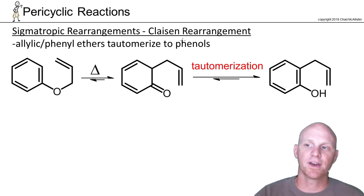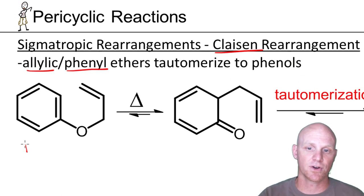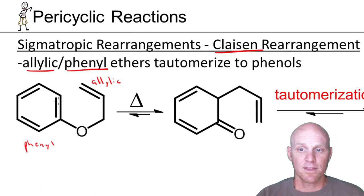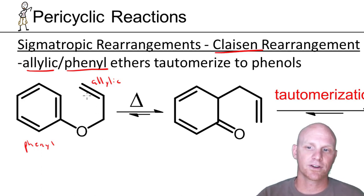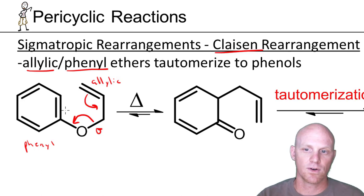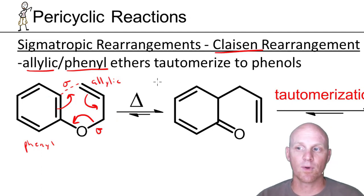There's one special case for the Claisen rearrangement: instead of having an allylic vinyl ether, you have an allylic phenyl ether — a benzene ring. Here's the phenyl part, here's the allylic part. The rearrangement is a little funky, but following the same cyclic movement of electrons — moving these, breaking a sigma bond here, forming a sigma bond here — counting 1, 2, 3 on each side makes it a 3,3 sigmatropic rearrangement, just like all Claisen rearrangements.